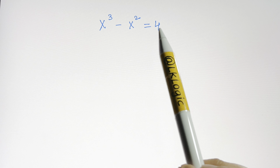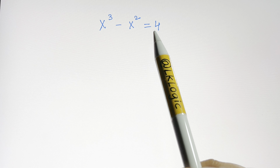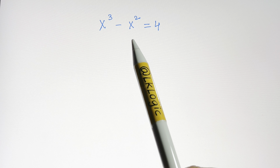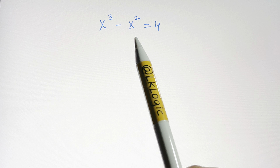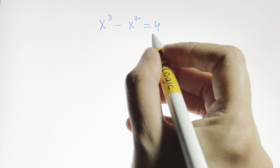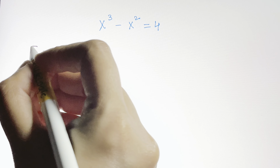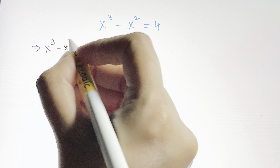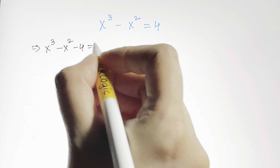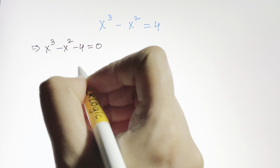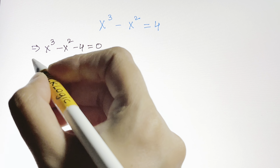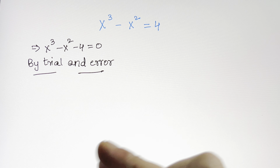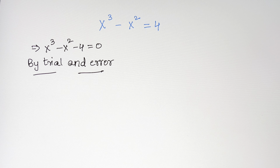Hi guys, here we have a cubic equation. We're going to solve this using the trial and error method and long division. Let's bring 4 to this side, so what we have is x³ minus x² minus 4 is equal to 0.